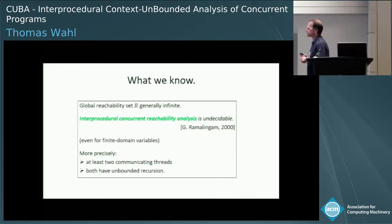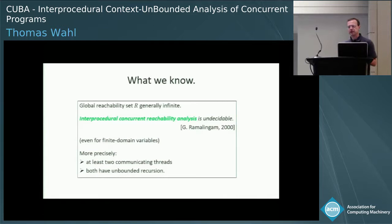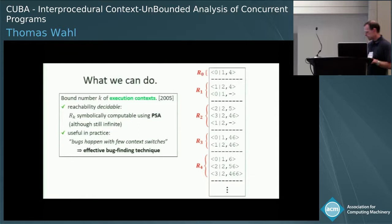Not only is the reachability state space infinite — reachability is in fact undecidable, as was discovered around 2000. There's a paper by Ramalingam, and the essence for us is that interprocedural concurrent reachability analysis is undecidable even for finite domain variables. So the next question is obviously: what can we do about this problem?